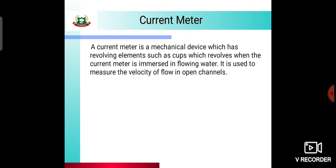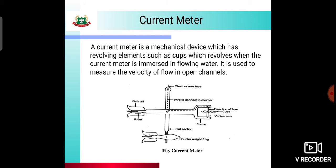The revolving element, the cup, is at the bottom of the device and revolves when the current meter is immersed in flowing fluid in open channels. There is a floater on top with a chain, and the cup remains immersed in water. Due to the flowing fluid, the cup revolves, and from this revolution we get readings from which we determine the velocity of flow in open channels.